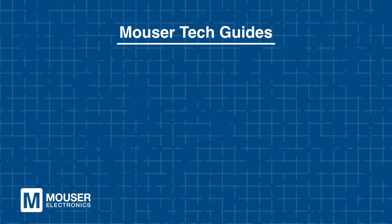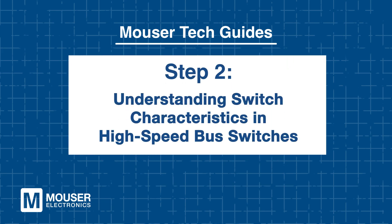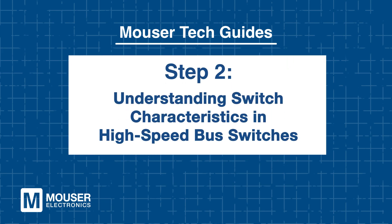The TDS4 series checks all the boxes for speed, efficiency, and design flexibility. Let's see how it ties into real-world switching behavior. Step 2: Understanding Switch Characteristics in High-Speed Bus Switches. In high-speed digital systems, precise signal timing is critical, and it all starts with understanding how switches affect signal flow.